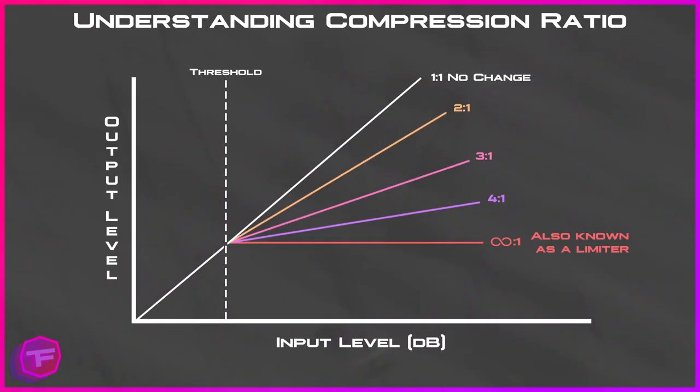The next parameter is the ratio. The compression ratio is often misunderstood — it simply specifies the amount of attenuation that's going to be applied to the signal, measured in decibels. A ratio of 1:1 represents unity gain, or no attenuation applied to the audio signal. A ratio of 2:1 indicates that a signal exceeding the threshold by two decibels will be attenuated down to one decibel above the threshold.